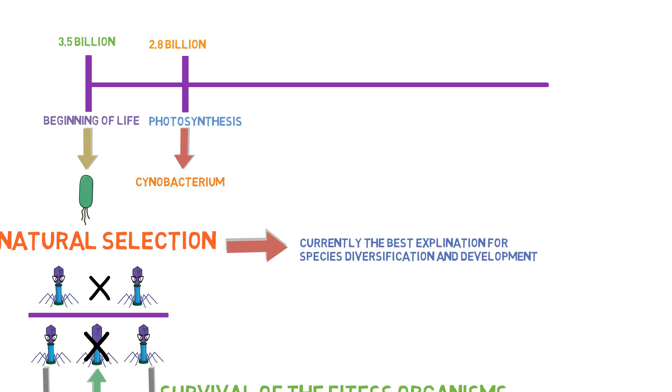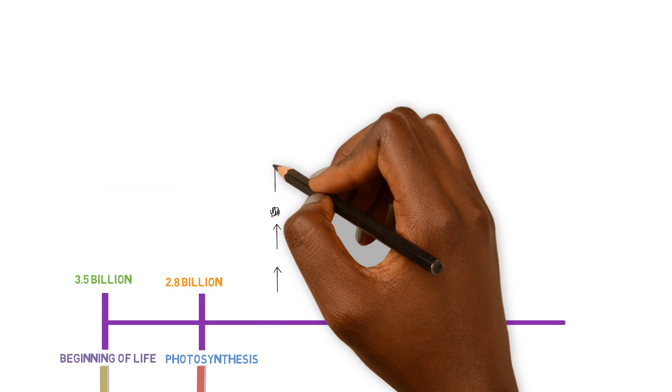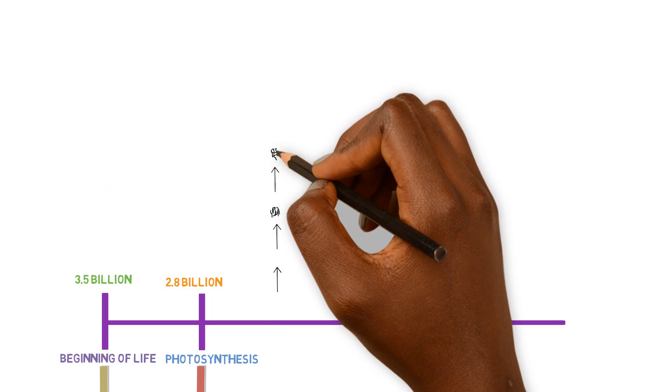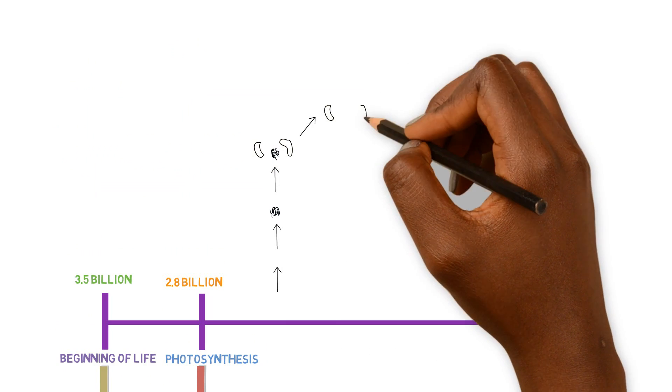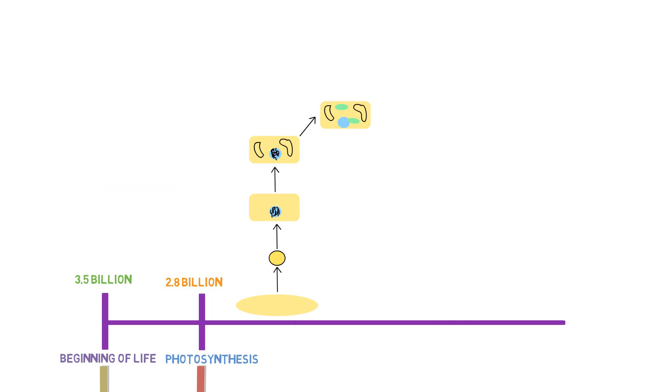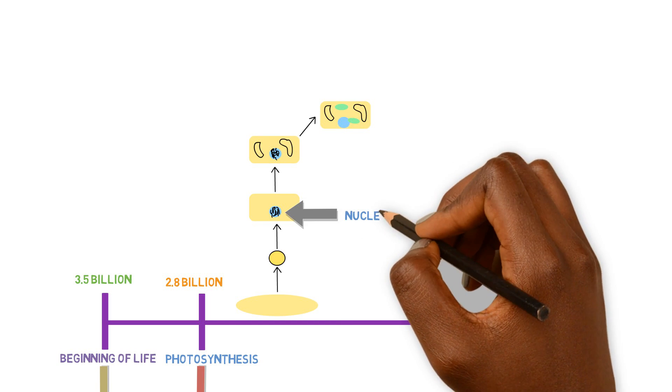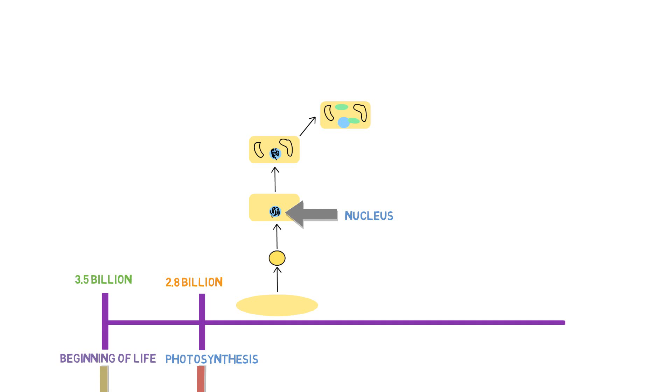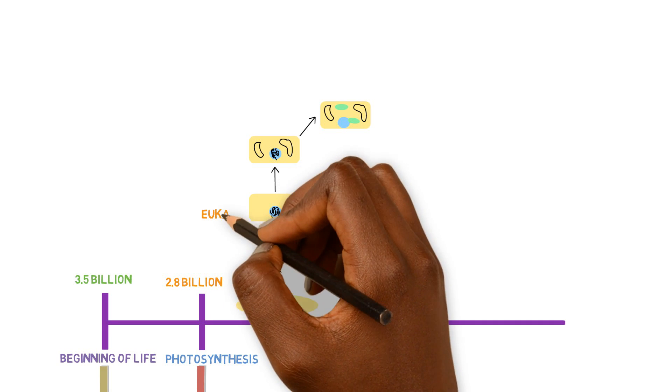Later, cells begin developing subcellular components known as organelles, which allowed for division of labor and specification of functions within the cell. Things began to get super spicy once DNA became located within its own organelle, the nucleus. This caused drastic changes in cell metabolism and resulted in the evolution of eukaryotic cells.